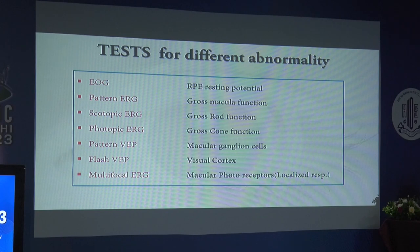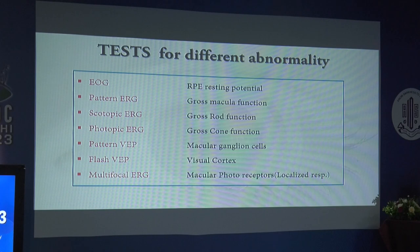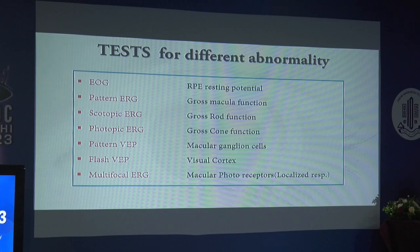The principle of electrophysiology is that it records a membrane resting potential and the changes that occur after light stimulation. There is a transmembrane movement of ions in retinal cells, mainly sodium and potassium, making the cells hyperpolarized — more negative to the extracellular space than in the dark. Unlike ECG where the heart is beating continuously, in ERG the cells are at resting condition and require light stimulation for changes to happen. The EOG informs about the RPE resting potential; pattern ERG tells us about gross macular function; scotopic ERG about gross rod function; photopic ERG about gross cone function; pattern VEP gives information about macular ganglion cells; flash VEP about visual cortex; and multifocal ERG tells us about macular photoreceptors.